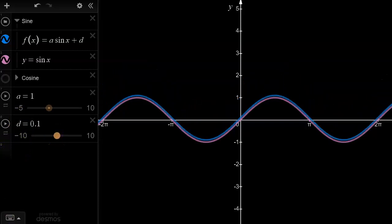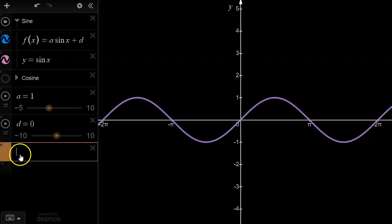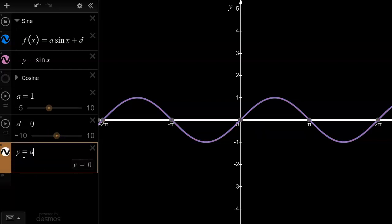So if I reset the d value to 0, and let's say I add in the equation y equals the d value, then I will know exactly where the median is. So when we start with the median is at y equals 0.